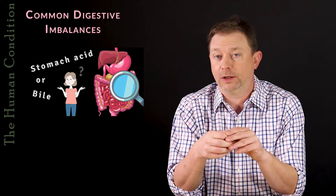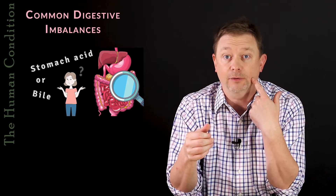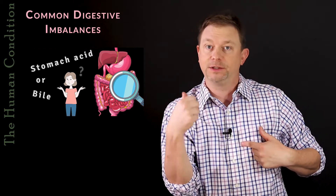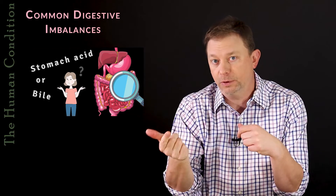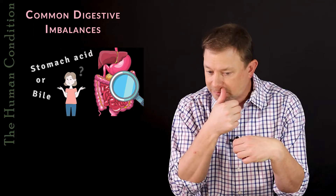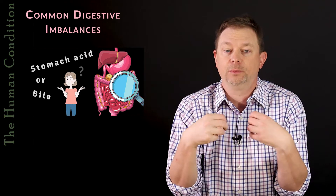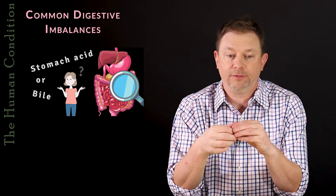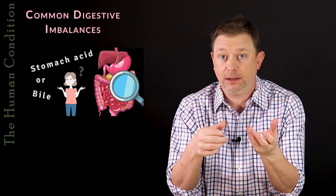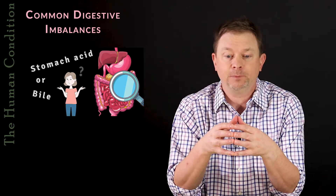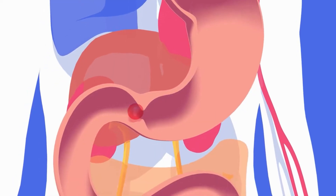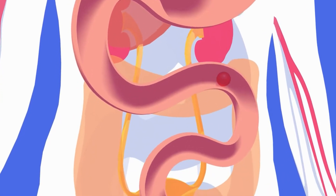Carbohydrates begin digesting right away from saliva in the mouth. But the acid portion of digesting protein and minerals doesn't really begin until the food hits the stomach. Once it hits the stomach and we have sufficient acid production, we really break down the protein and minerals into something highly digestible. Then when the stomach is done, it'll empty into the small intestine.